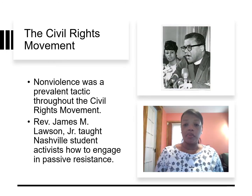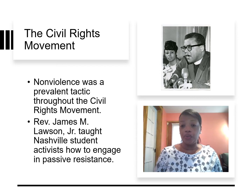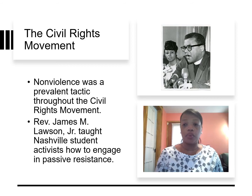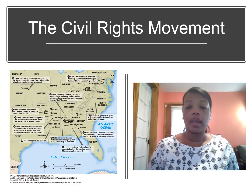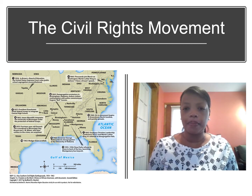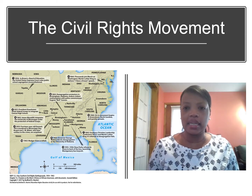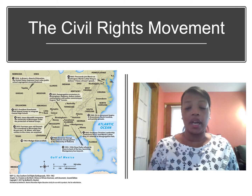Throughout the Civil Rights Movement, activists used nonviolence to further their aims. This included participating in marches, sit-ins, boycotts, and other peaceful protests. Reverend James M. Lawson Jr., for example, taught Nashville student activists how to engage in passive resistance. This map depicts some of the significant events in the Civil Rights Movement, occurring throughout the 1950s and 1960s throughout the South and in other regions of the country as well.